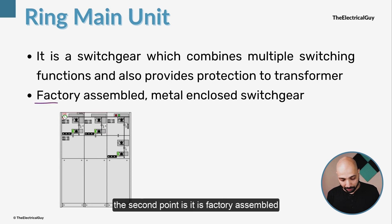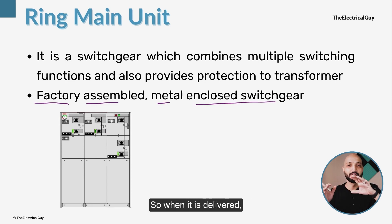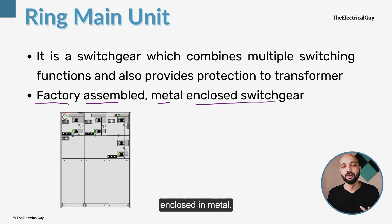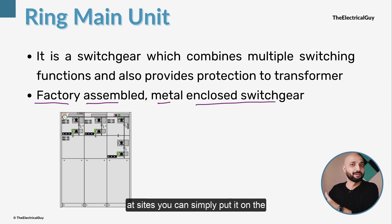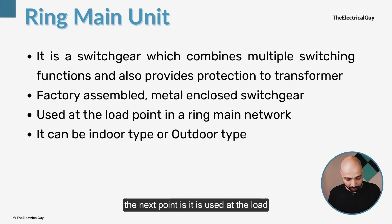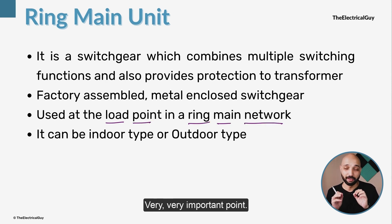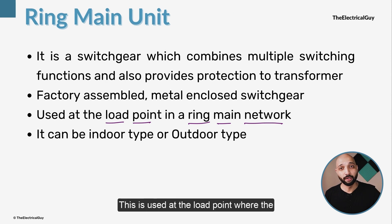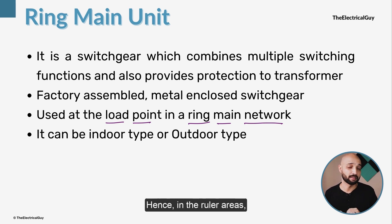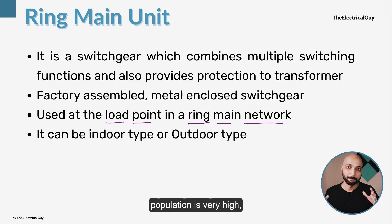The second key point is that it is a factory-assembled, metal-enclosed switchgear. When delivered, it arrives completely assembled and enclosed in metal — no modifications are needed on site; simply place it on the foundation, install it, attach the cables, and you are good to go. Importantly, it is used at the load point in the ring main network where the transformer is connected — you will generally not find this device in radial type distribution networks.